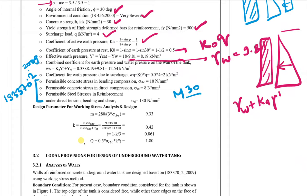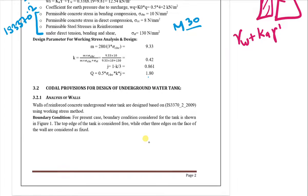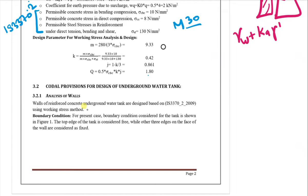These are the design parameters for obtaining reinforcement from moments using the Working Stress Method. The modular ratio m = 280 / (3 × σcbc) = 9.33. The neutral axis depth factor K = m × σcbc / (m × σcbc + σst) = (9.33 × 10) / (9.33 × 10 + 130) = 0.42. The lever arm factor J = 1 - K/3, and the moment of resistance coefficient Q = 0.5 × σcbc × K × J = 1.8.